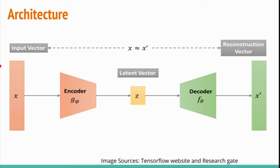Let's first understand the autoencoder architecture. An autoencoder can be divided into two parts: the encoder and the decoder. The encoder maps from input space X into a lower-dimensional latent space.